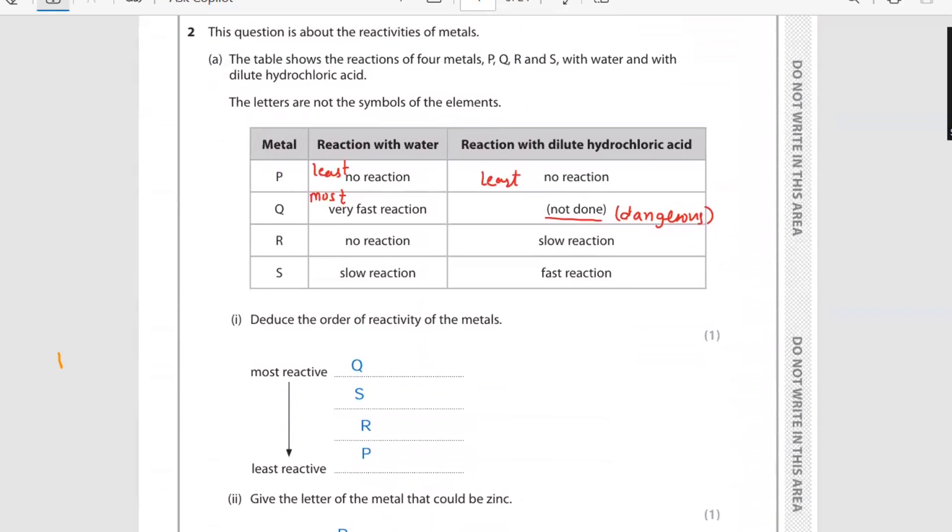Question number two: this question is about the reactivities of metals. The table shows the reaction of four metals P, Q, R, and S with water and with dilute hydrochloric acid. The letters are not the symbols of elements. P is giving no reaction with water and no reaction with dilute HCl - it means it's the least reactive element. So here we will put it as least reactive. Then comes Q - Q is very fast with water and its reaction with dilute HCl is not even done because it's very dangerous, so it's most reactive.